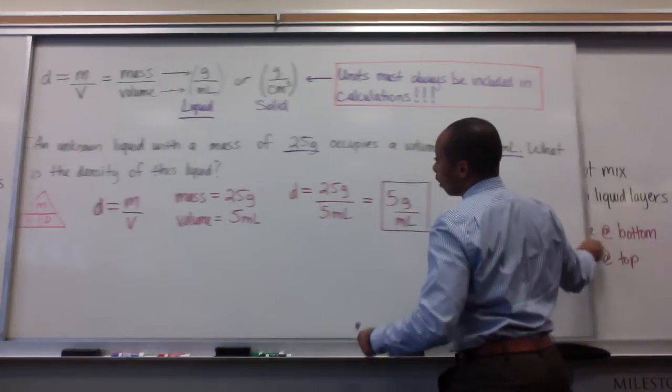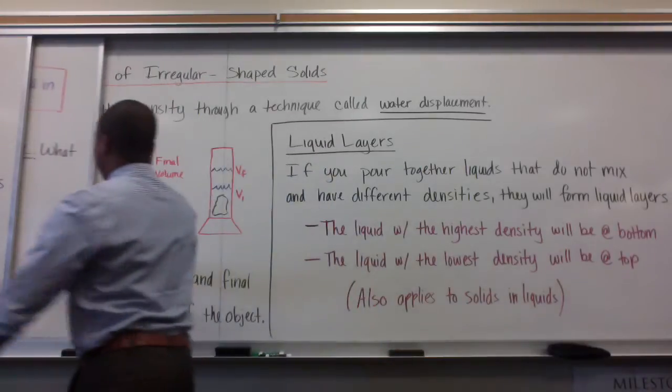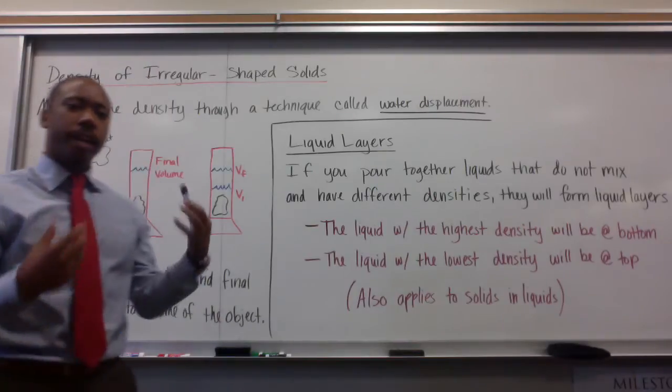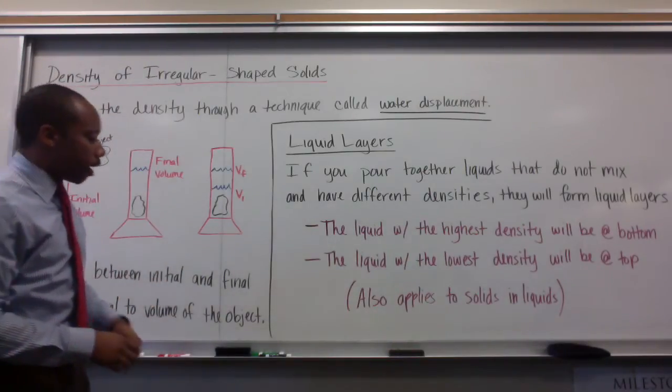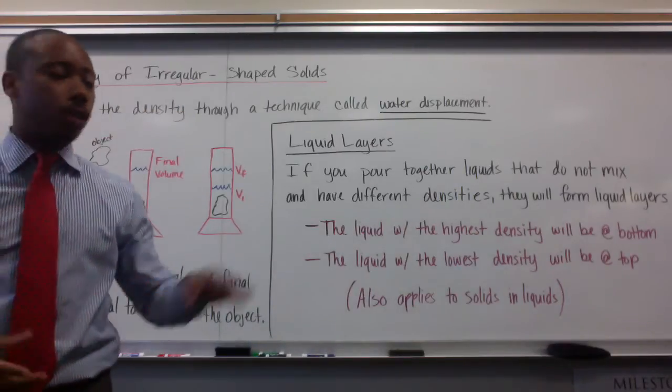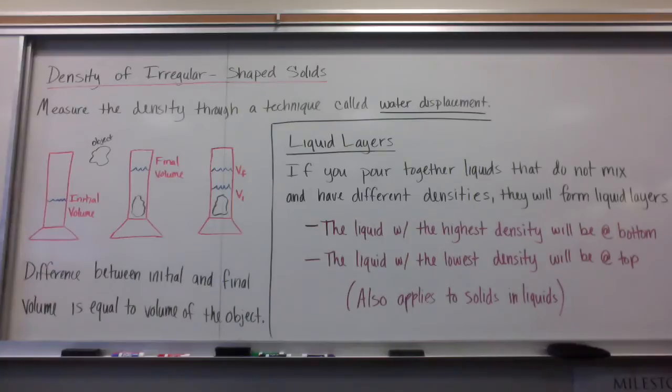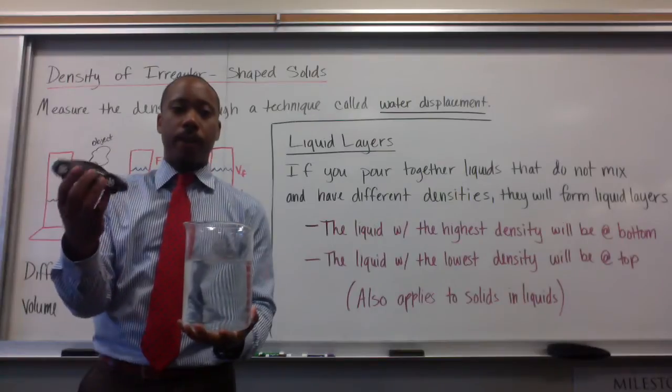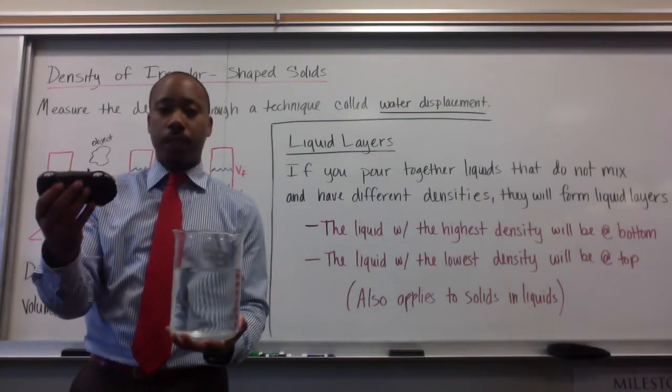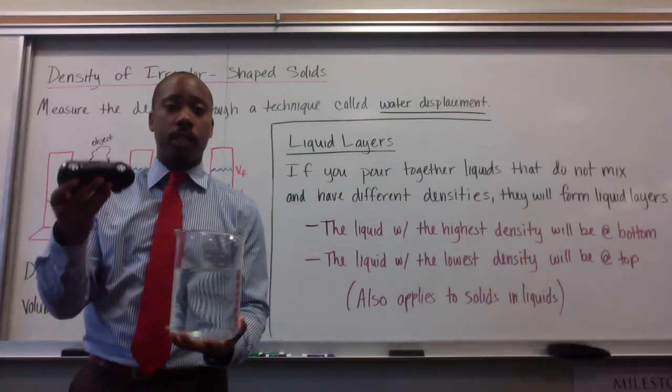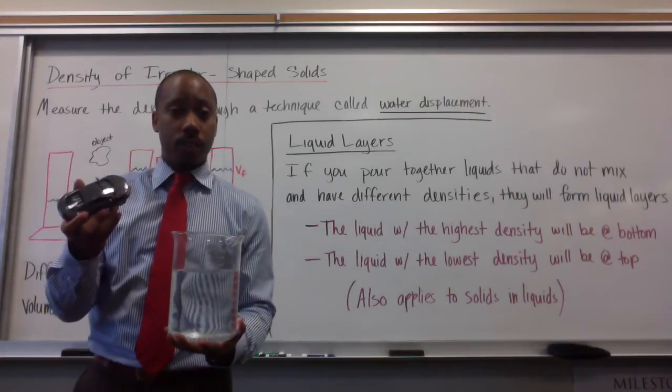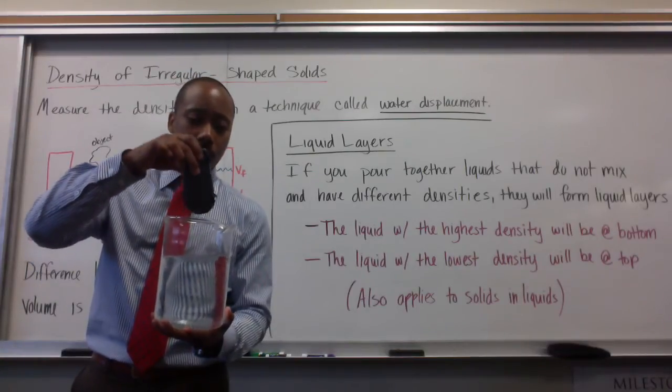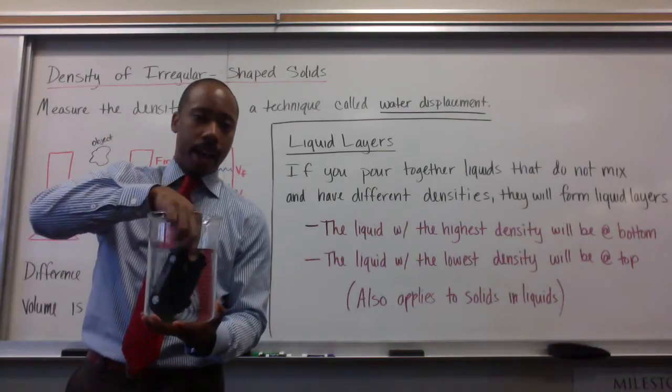What happens when the object we're trying to measure has a very weird shape? We call that an irregular shaped object. The density of an irregular shaped object is found through a technique called water displacement. For example, if I have water, like in this beaker here, and I put an irregular shaped object. Irregular means it's not a cube, it's not a sphere, or a pyramid, or a cylinder. Something that has a given volume equation. There's no volume equation to calculate the volume of this car here. A technique that I could use is water displacement. I put this car in,